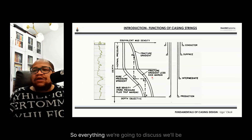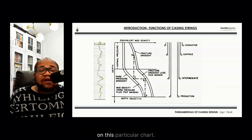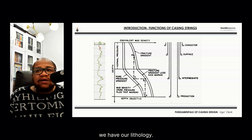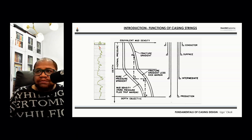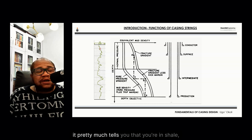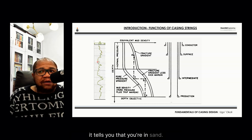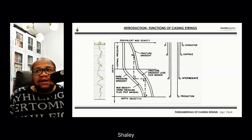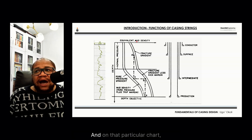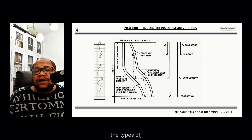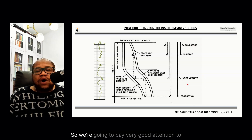Everything we're going to discuss we'll be doing on this particular chart. To the far left we have our lithology — the gamma ray log showing the lithology. When the curve goes to the left it tells you that you're in shale, and when it deflects inward it tells you that you're in sand. The higher it is, the more shaley the formation. The chart in the center shows depth versus equivalent mud density, with a plot of pore pressure and fracture gradient. To the far right are the types of casing we will be setting: conductor, surface casing, intermediate casing, and production casing.